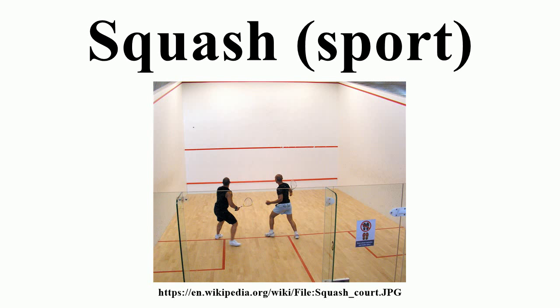If the server wins the point, the two players switch sides for the following point. The players take turns hitting the ball against the front wall, above the tin and below the outline. The ball may strike the side or back walls at any time, as long as it hits below the outline. It must not hit the floor after hitting the racket and before hitting the front wall. After the ball hits the front wall, it is allowed to bounce once on the floor before a player must return it. Players may move anywhere around the court but accidental or deliberate obstruction of the other player's movements is forbidden. Players typically return to the center of the court after making a shot.